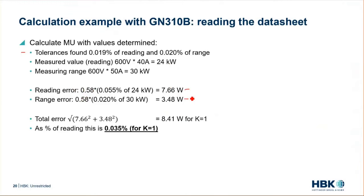We calculate the individual errors in watts, then use geometric addition — squaring both values, summing them, and taking the square root. The measurement uncertainty at this specific measurement point is 8.41 watts for k equals 1, which as a percentage of reading is 0.035 percent. K equals 1 indicates a one-sigma coverage of the result.